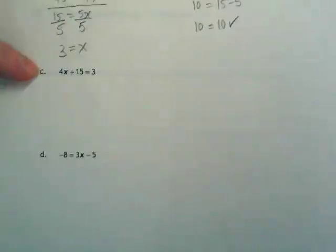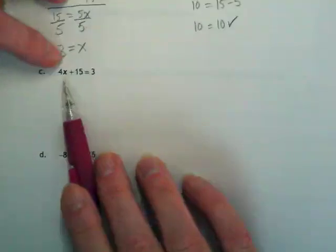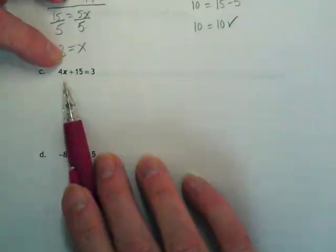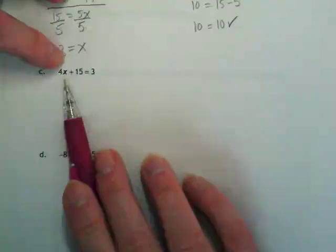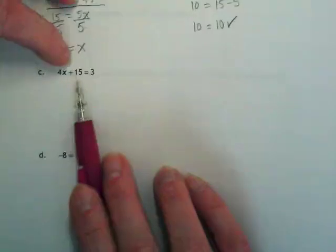Okay, so I'm going to go through these and talk through the process. Remember what we're trying to get is the X by itself. If you're picturing this side of the equation is something on a scale and this side is the other side, we want to get what we call like terms together.